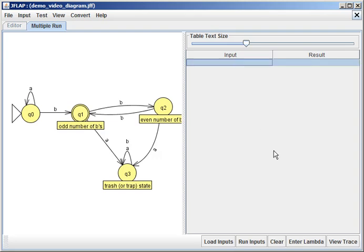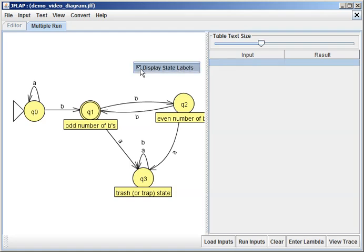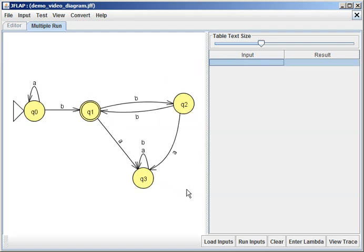And now you can just type a whole bunch of options here. Let's move this over a little bit. I'm gonna right click and get rid of those state variables. So I'm gonna try just an A by itself. I'm gonna try two A's. I'm gonna try the empty string. If you want to do the empty string, you need to go down here and just click enter lambda.